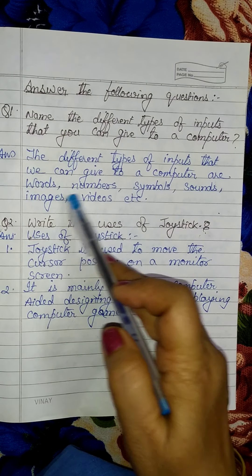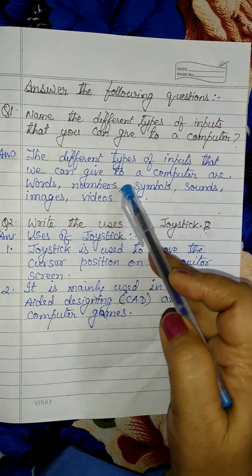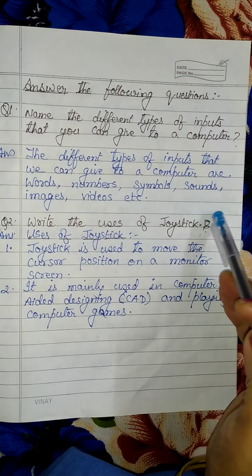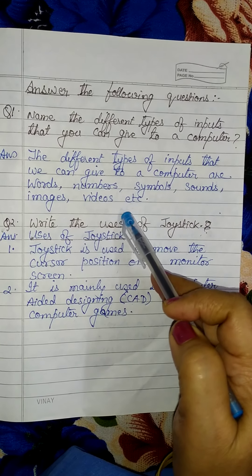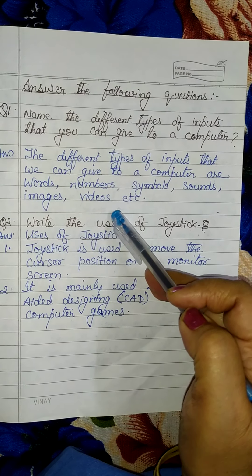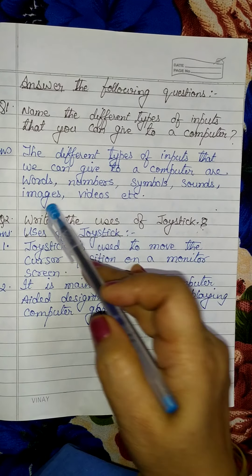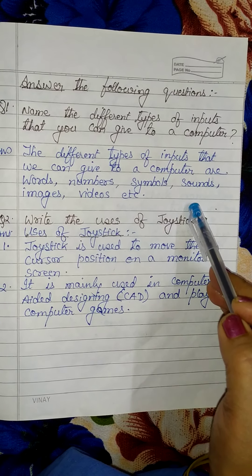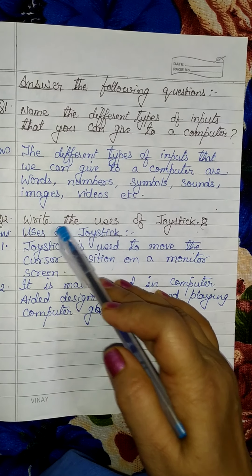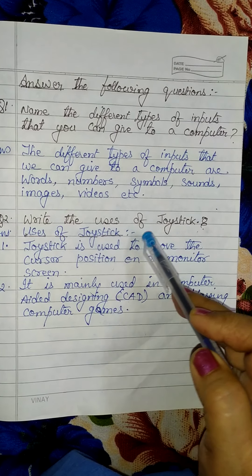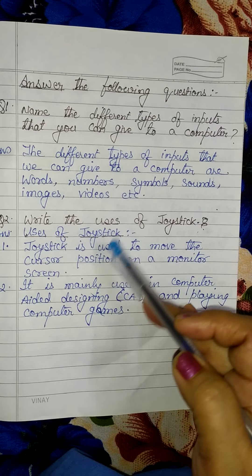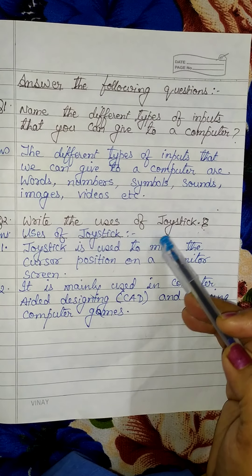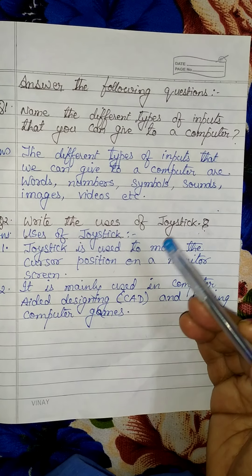In the description, put a comma after each item. After this, leave a space or draw a line with the help of a scale. Now Question 2: Write the uses of a joystick. What is the use of a joystick? We use it to control the position of the cursor, to play video games, and to design computer-aided designs.